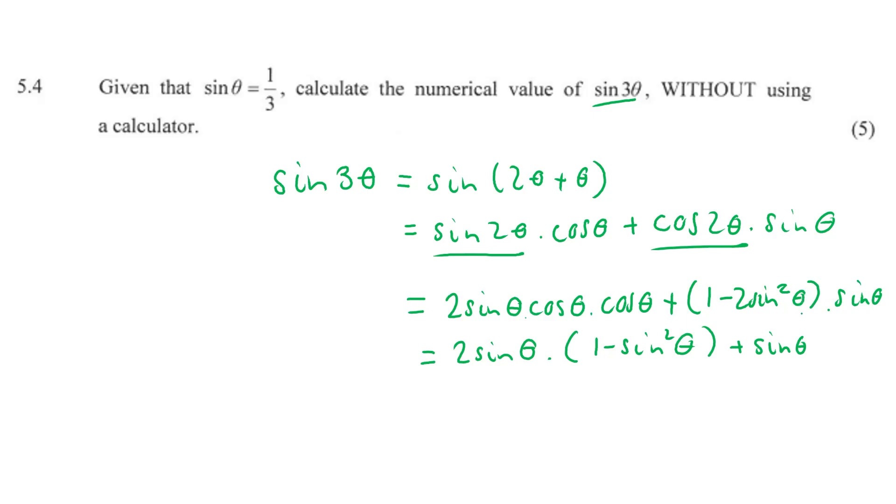And now there's a minus. Very interesting. Now let's distribute the 2 sine theta into the bracket. So 2 sine theta times 1 is just going to be 2 sine theta minus 2 sine theta times negative sine squared theta. That's going to be negative 2 sine cubed theta again. Plus a sine theta minus a 2 sine cubed theta once more.